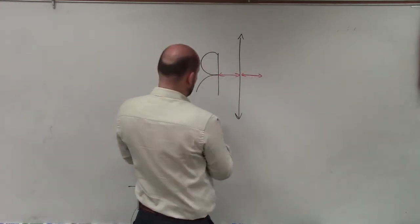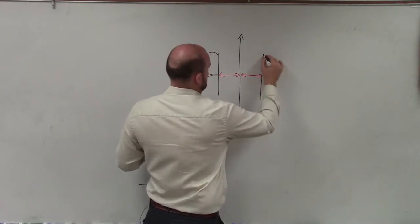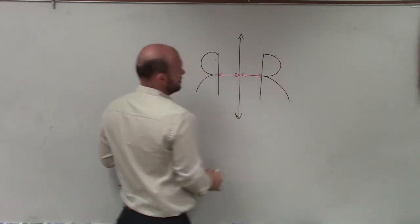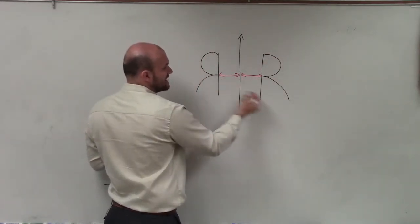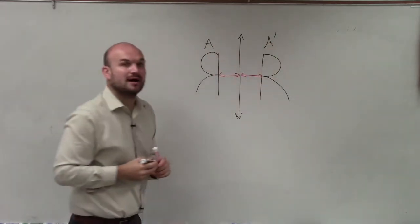So when I reflect this back over, my image is going to look something like this. All right, and notice how the distances are exactly going to be the same. So if I call this my image A, this would be my image A prime.